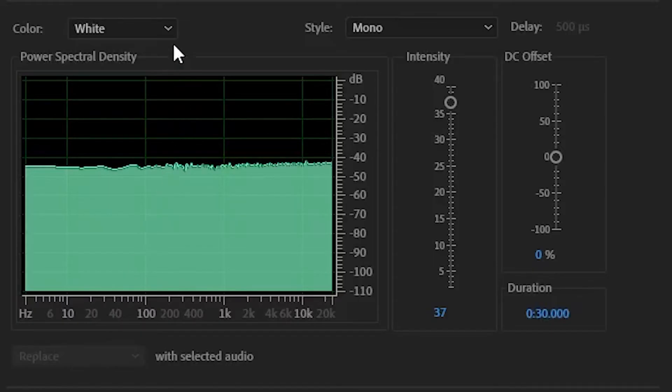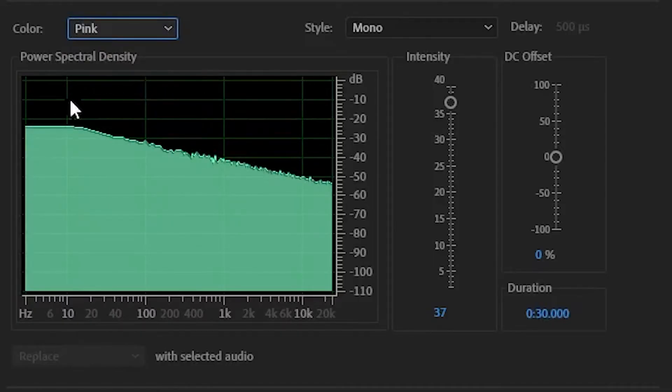Pink noise, on the other hand, forms a slanted line with more energy allocated to the lower frequencies. For this reason, pink noise sounds a bit darker than white noise.